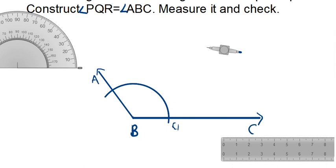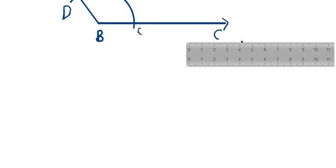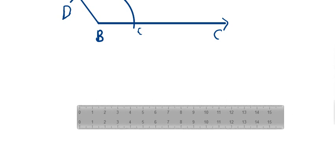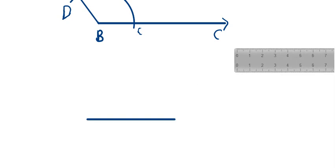Once this arc is done, we take the ruler and draw one more line. It is up to you what length you want to make it — let's take it about 7 units. This line will be named QR, because the point we are going to make will be P, so the angle is PQR.